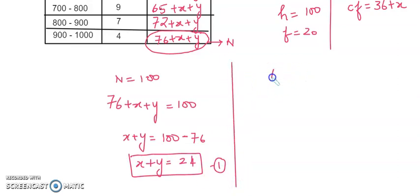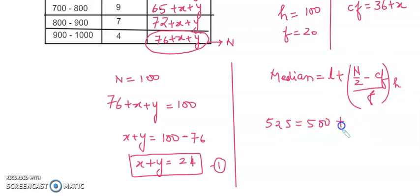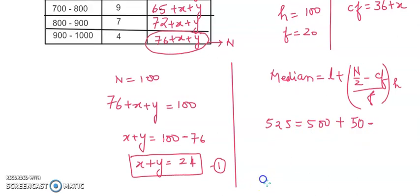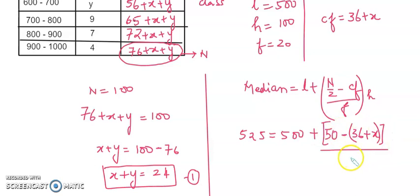Now we use the median formula for the second equation: median equals L plus (n by 2 minus CF) divided by F, multiplied by H. Median is 525, lower limit is 500, n by 2 is 50, CF is 36 plus x, F is 20, and class length is 100. Simplifying 20 and 100 gives 5.